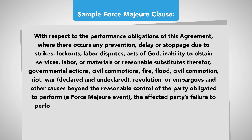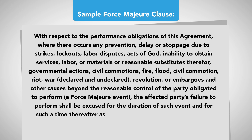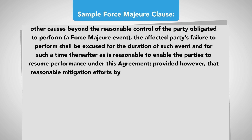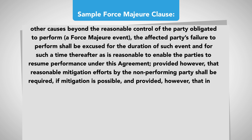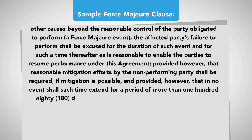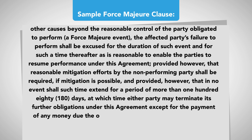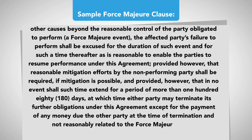the affected party's failure to perform shall be excused for the duration of such event and for such a time thereafter as is reasonable to enable the parties to resume performance under this agreement, provided, however, that reasonable mitigation efforts by the non-performing party shall be required if mitigation is possible, and, provided, however, that in no event shall such time extend for a period of more than 180 days, at which time either party may terminate its further obligations under this agreement, except for the payment of any money due the other party at the time of termination and not reasonably related to the force majeure event.